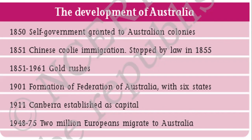Here is the development timeline of Australia: 1850 — self-government was granted to the Australian colonies; 1851 — Chinese coolie immigration started but was stopped by law; 1851 to 1861 — the gold rushes; 1901 — formation of the Federation of Australia with six states; 1911 — Canberra was established as capital; and 1948 to 1975 — two million Europeans migrated to Australia.